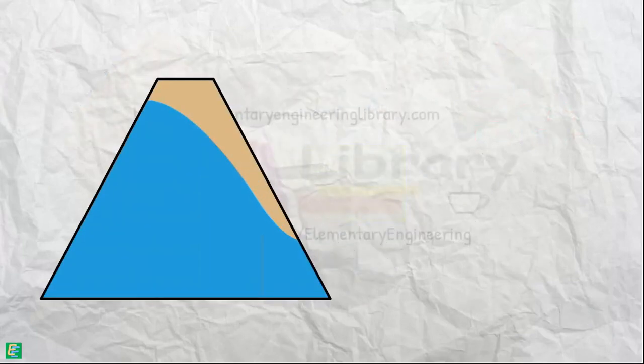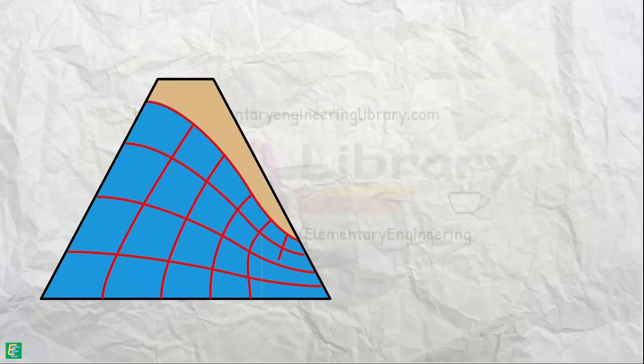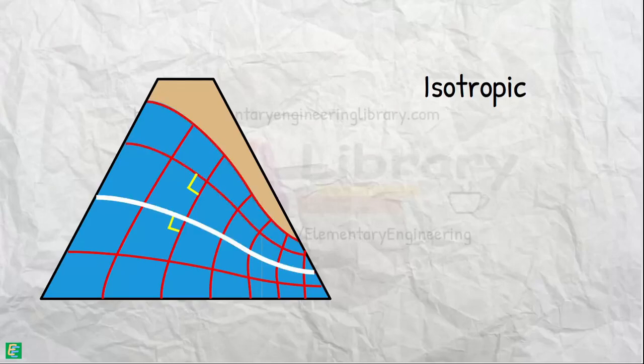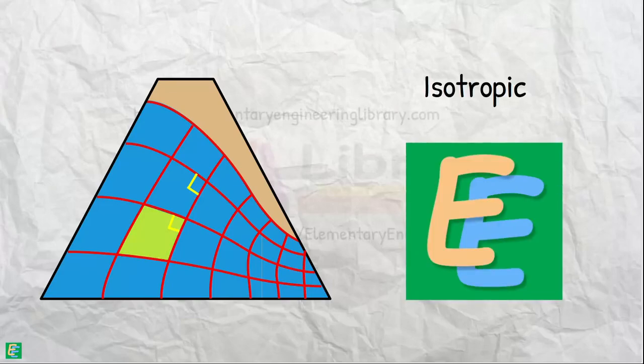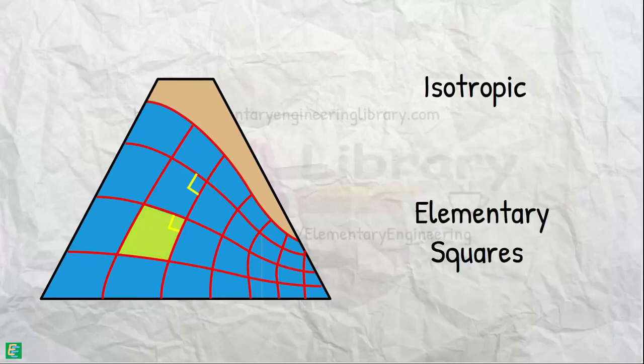Now, for this new transformed section, we can draw the flow net by following the method of constructing the flow net. As we have transformed this section to isotropic, the flow net for this section will have orthogonal intersections of flow lines and equipotential lines, with all its fields being elementary squares.